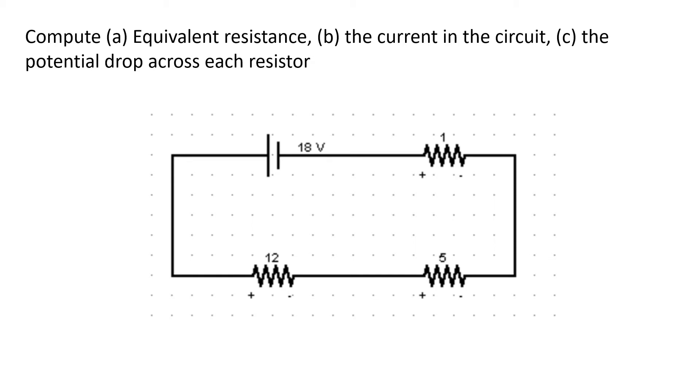Okay, so let's try to solve this simple problem for resistors in series. According to this example, let's compute first the equivalent resistance, then the current in the circuit, then the potential drop across each resistor.